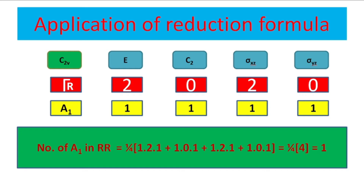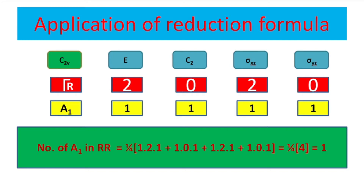For the second irreducible representation, A2: the number of times A2 occurs equals 1 upon 4, in square brackets: 1 into 2 into 1, plus 1 into 0 into 1, plus 1 into 2 into minus 1, plus 1 into 0 into minus 1. The summation in the bracket is 0, so 0 divided by 4 equals 0. A2 occurs 0 times in that reducible representation.